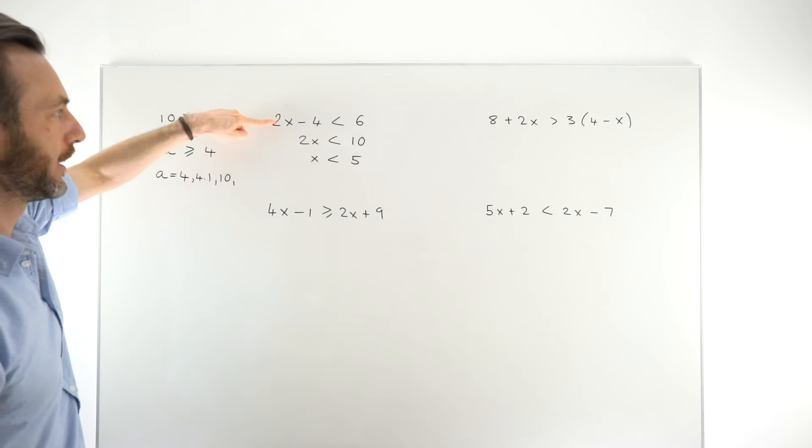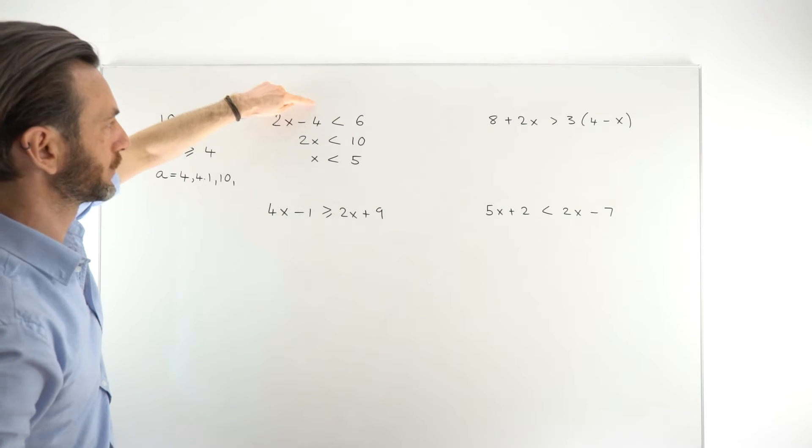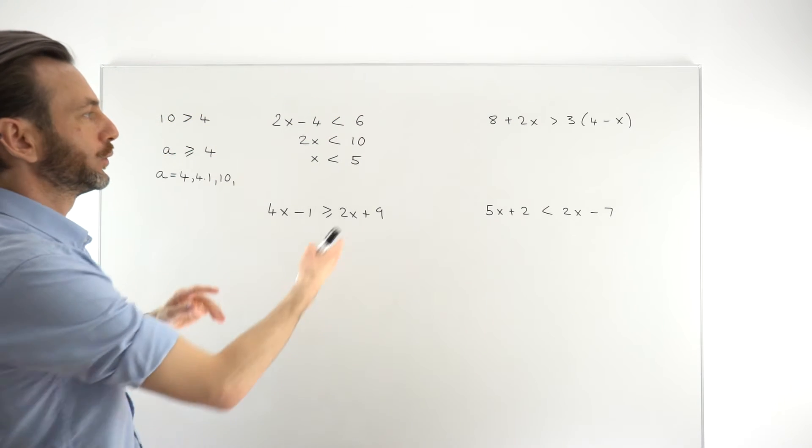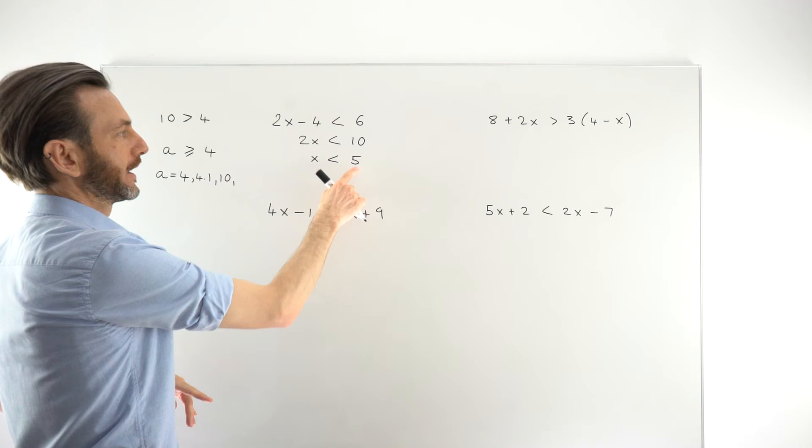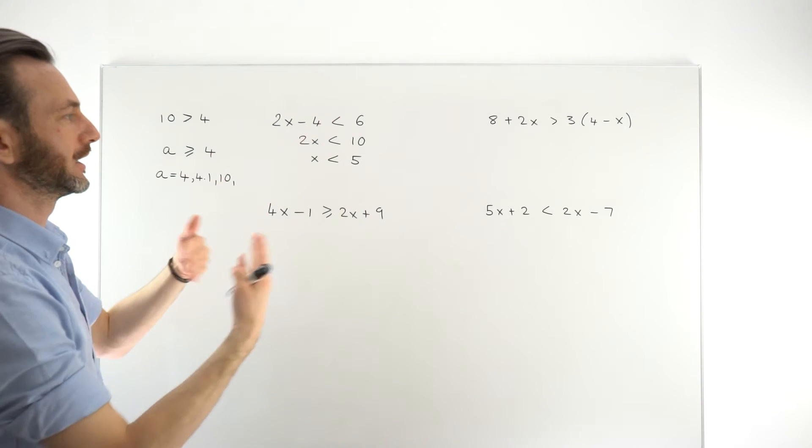And we would get x is less than 5. So to satisfy that original inequation, 2x minus 4 being less than 6, we've concluded that x has to be less than 5. And if you look at the numbers, that kind of makes sense.